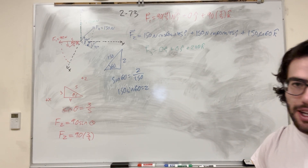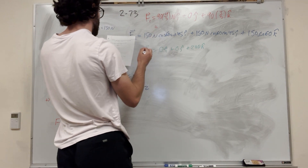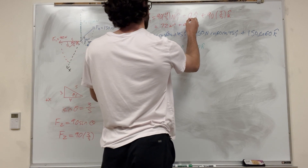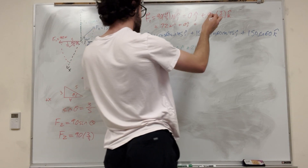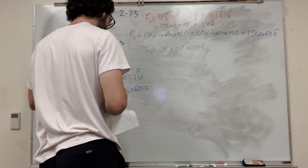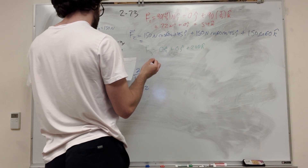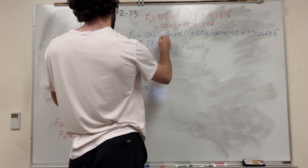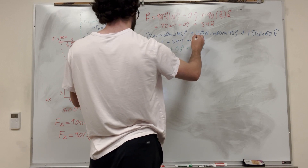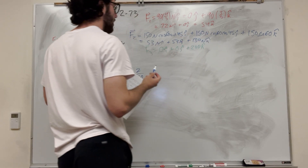Now let's compute the actual numbers. For force 1: 90 × (4/5) = 72 Newtons in i, 0 in j, and 90 × (3/5) = 54 Newtons in k. For force 2: 150 × cos60 × sin45 ≈ 53 Newtons in i, 53 Newtons in j — same thing there — and 150 × sin60 ≈ 130 Newtons in the k-direction. Don't forget your units.